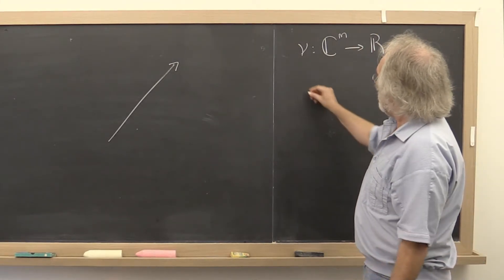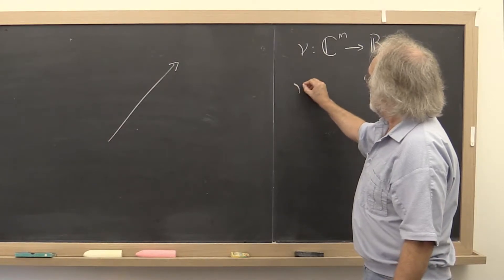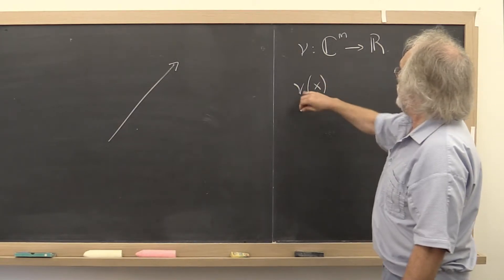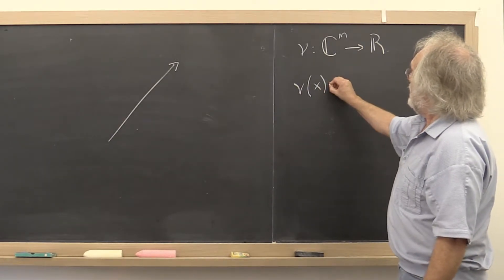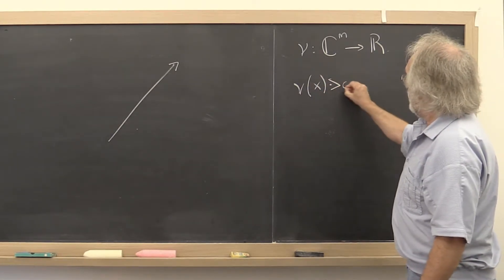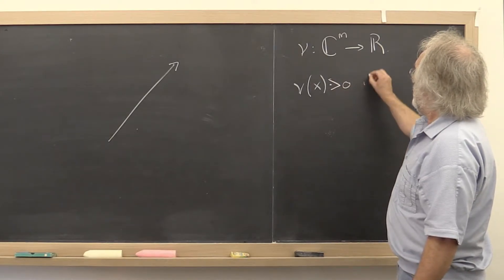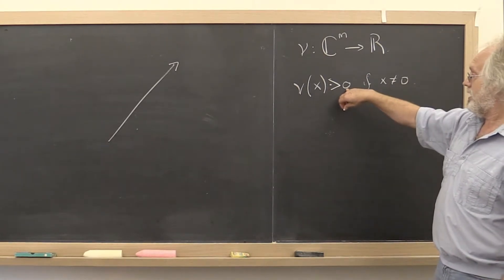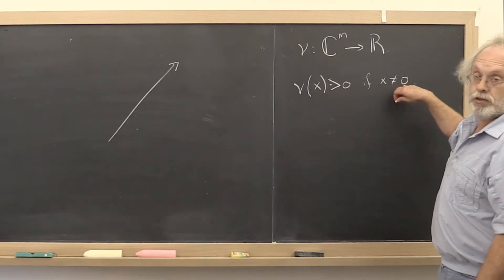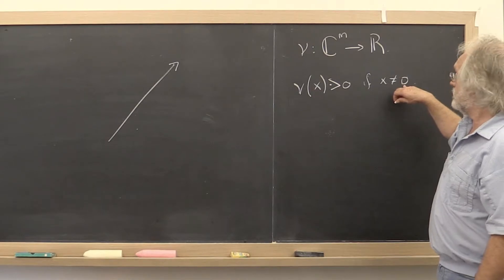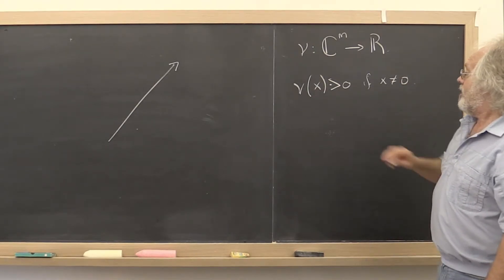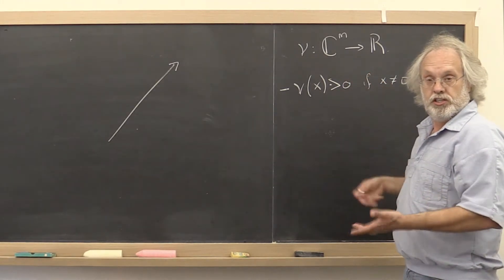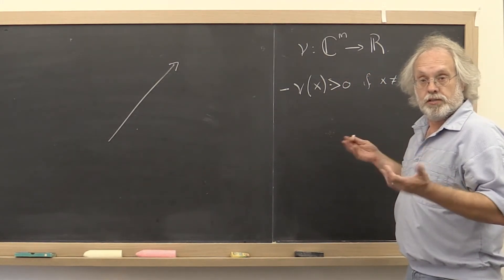And the kind of properties that we want are that the length of that vector, nu, is greater than zero if x is not the zero vector. So zero here is the scalar zero, and zero here represents the zero vector. And that particular condition we saw before is known as this function, this norm, being positive definite.